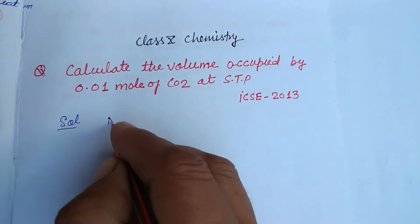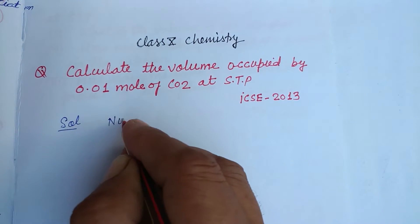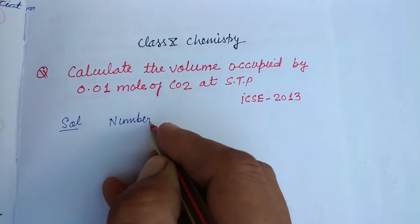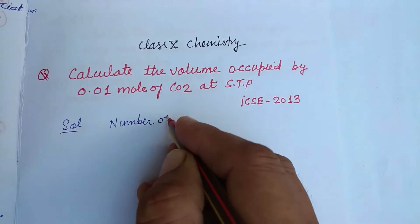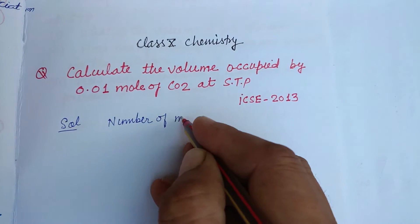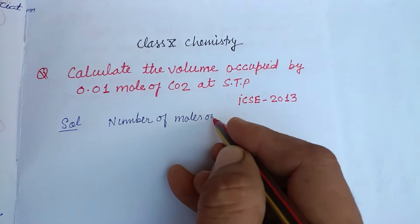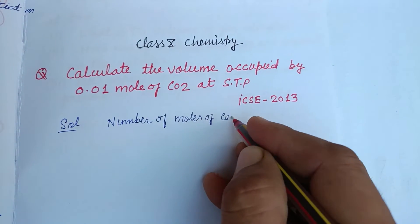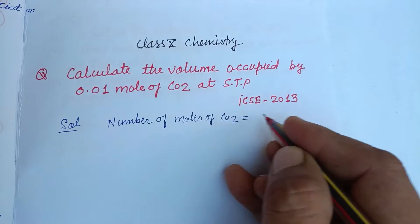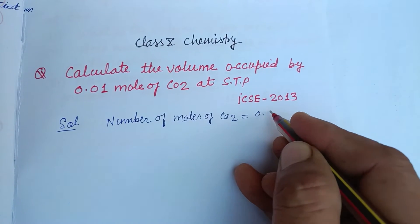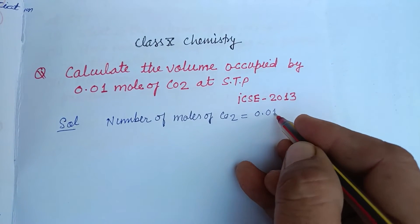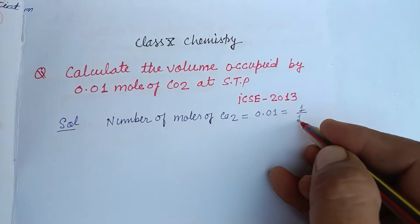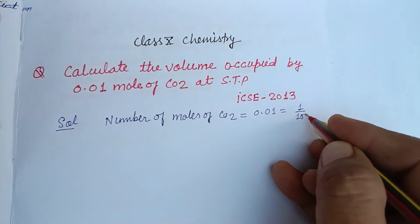Here, the number of moles of CO₂ given is 0.01, which we can write as 1/100.